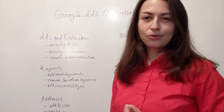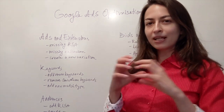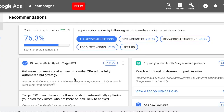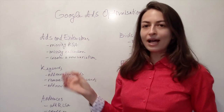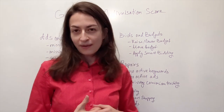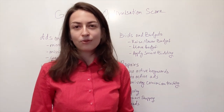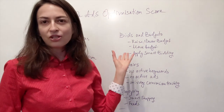Once you click into recommendations you have different clusters. For example, under Ads and Extensions you'll see recommendations on missing responsive search ads, missing extensions, creating a new ad variation, or adding a dynamic search ad. If you haven't watched my video on responsive search ads and smart creatives, you can watch it here.